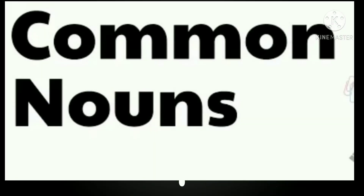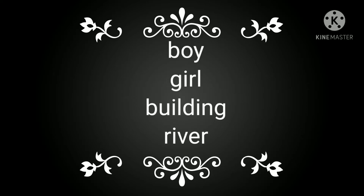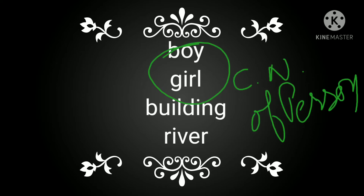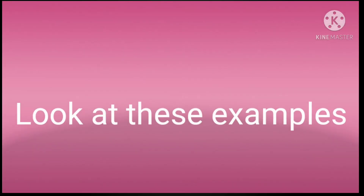Next is common noun. Common noun is the common name of a person, place, thing and animal. For example, boy, girl, building, river. Common noun kisih person, place, thing, or animal ka common name hota hai. Yahan boy or girl — kisih particular name ke baare mein nahi bataya gaya hai — so these are common nouns.